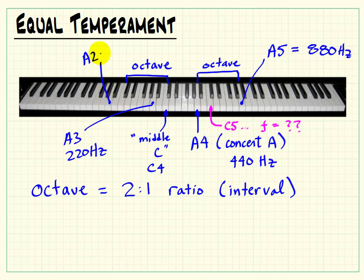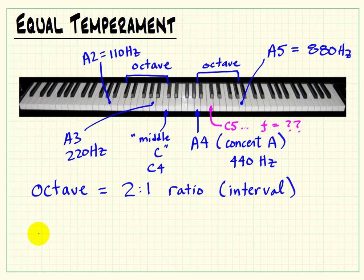A2 would be 110 Hertz. Incidentally, 20 Hertz is the lower limit of human hearing, so you can start to get a sense of how close we're getting to that limit.